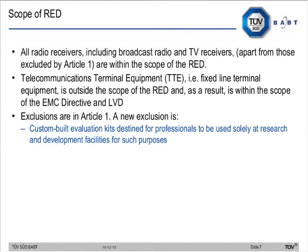All radio receivers, including broadcast radio and TV receivers, are now within the scope of the RED. Previously, broadcast radio and TV receivers were excluded from the R&TTE directive in Annex 1. Now they're all within the scope of the RED, whereas previously they would have been covered by the EMC and low voltage directives.